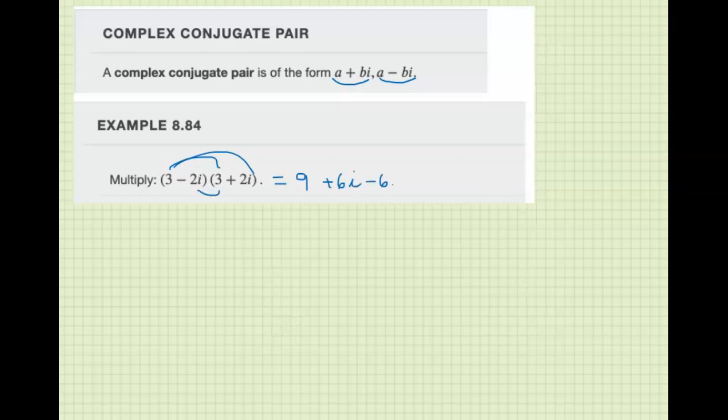These cancel because they're conjugates, but the i vanishes here too because i squared is negative one. So we have nine plus four, which is thirteen. When you multiply complex conjugate pairs, your answer is real. It's very useful to use that or to know that.